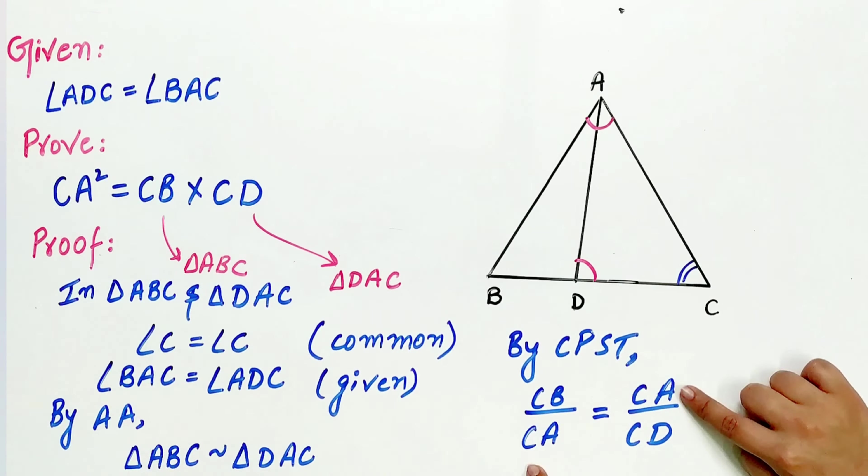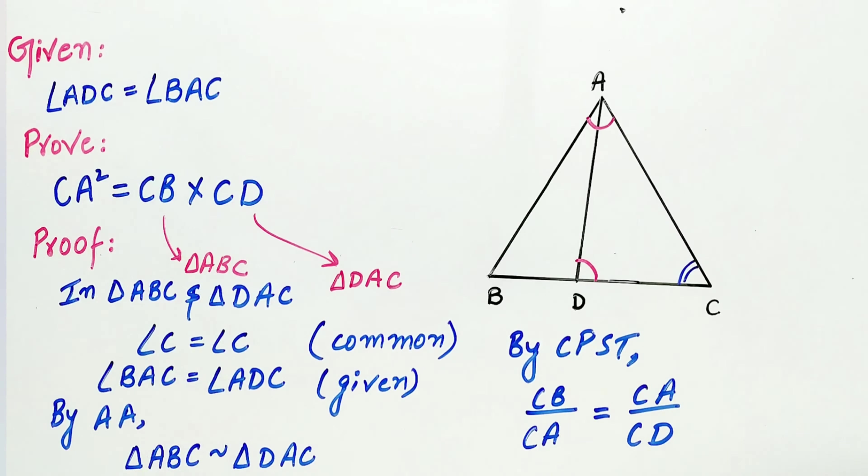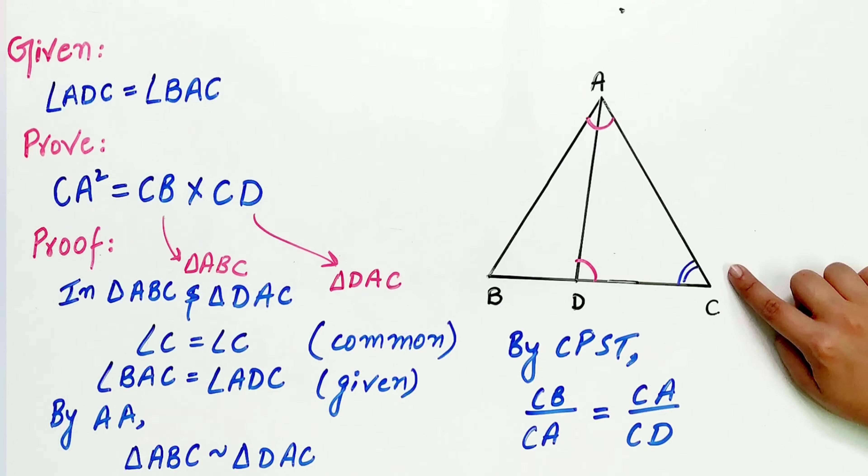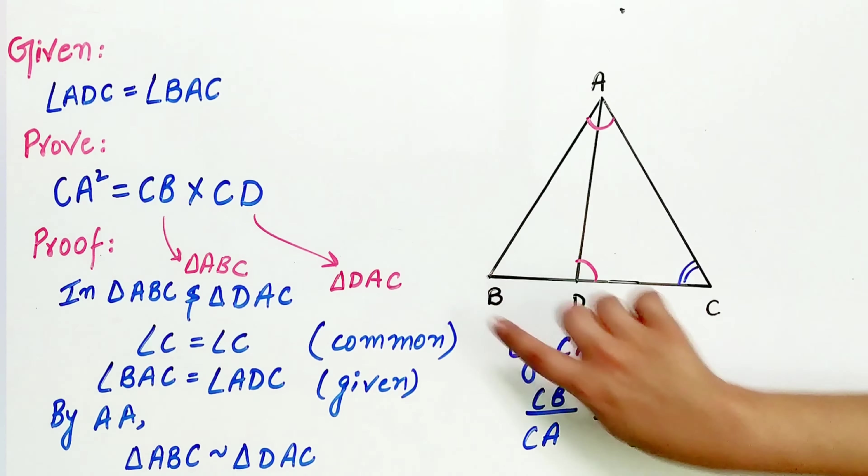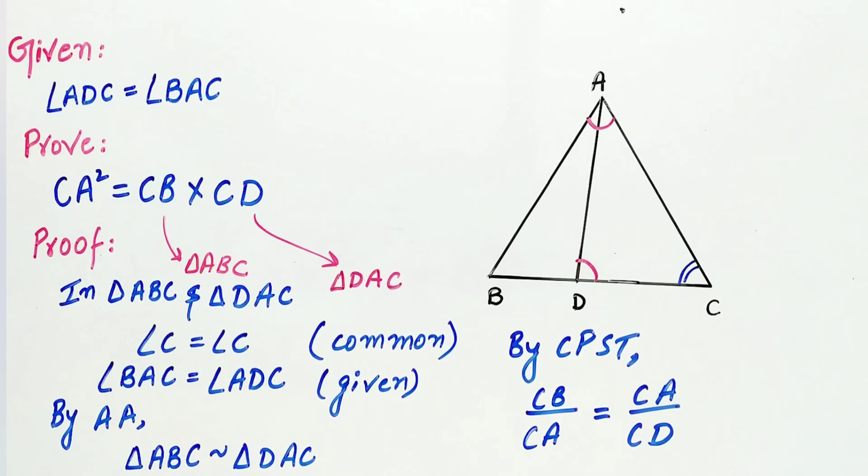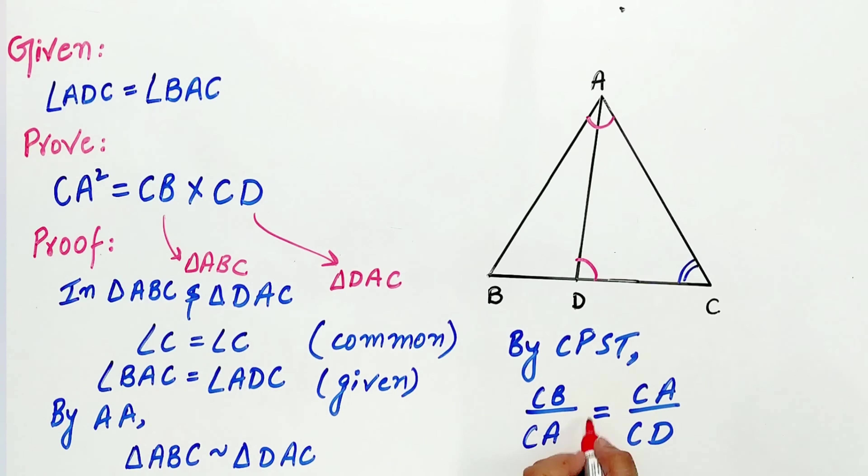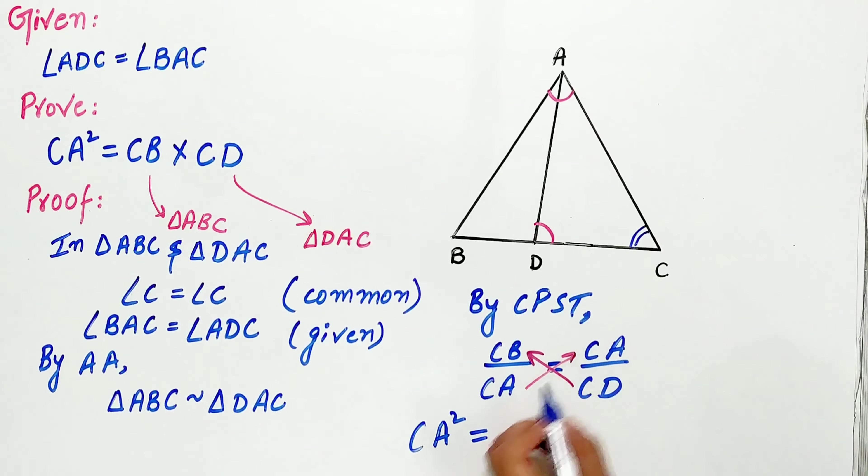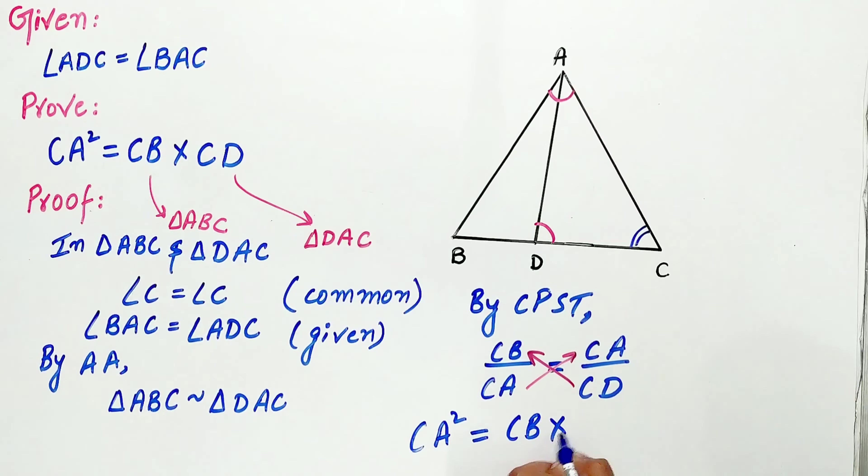Now CA lies in both the triangles. That is, CA is a side of triangle ABC as well as of triangle ADC. Now cross multiply. Hence CA square is equal to CB multiply CD.